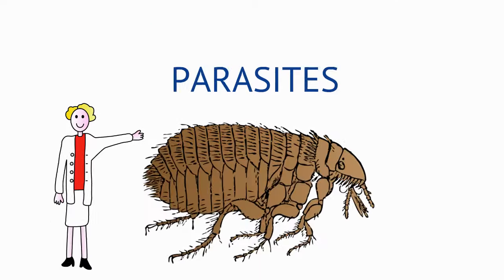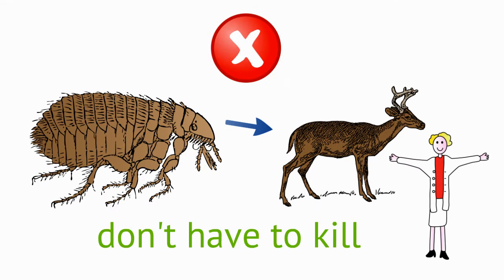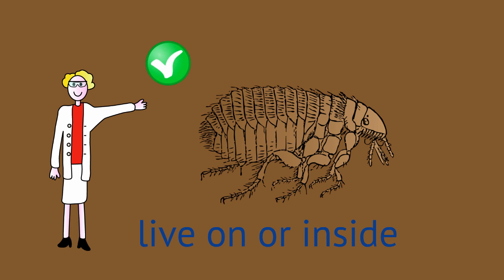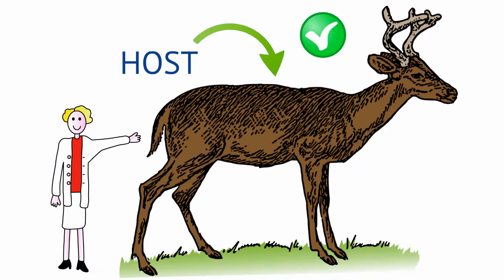But what about parasites? Parasites don't have to kill an animal in order to feed off it. In fact, parasites live on or inside a living animal, harming it, but not killing it immediately. The animal they live on and feed off is called the host.